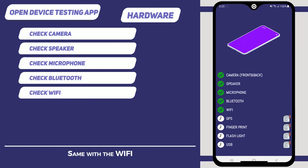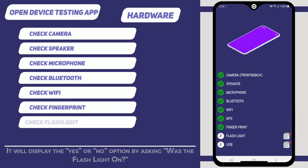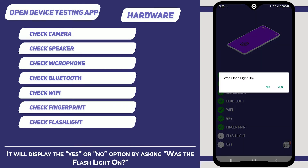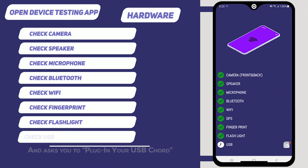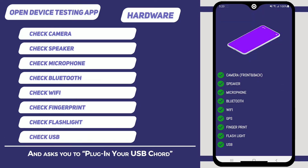It automatically tests Bluetooth from the device, the same with Wi-Fi and also with the fingerprint. It will display a yes or no option by asking whether the flashlight is on, and asks you to plug in your USB cord.